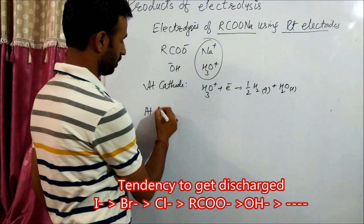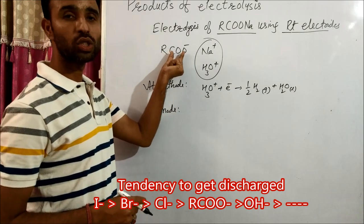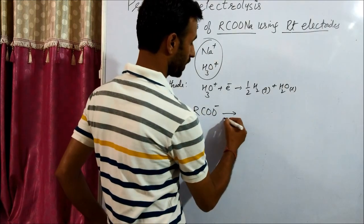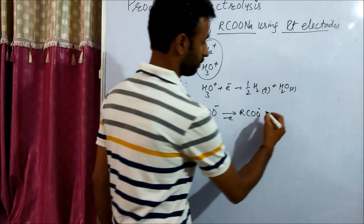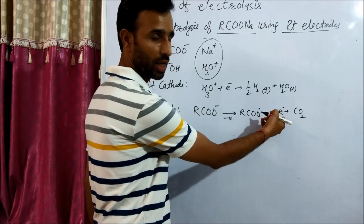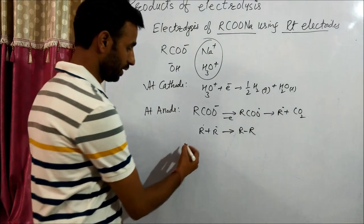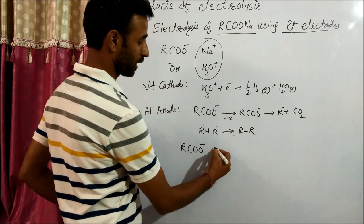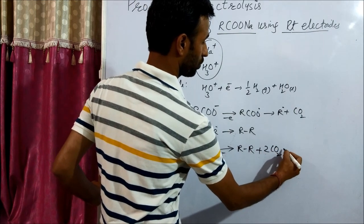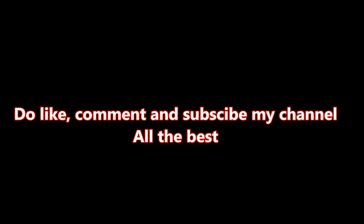Now at anode, tell me out of RCOO- and OH-. And keep in mind RCOO- has lower discharge potential. RCOO- loses one electron to give RCOO· which in turn gives R·. This is called free radical or alkyl free radical. And two alkyl free radicals combine together to give alkane. So overall reaction is 2RCOO- loses 2 electrons to give alkane plus 2CO2.